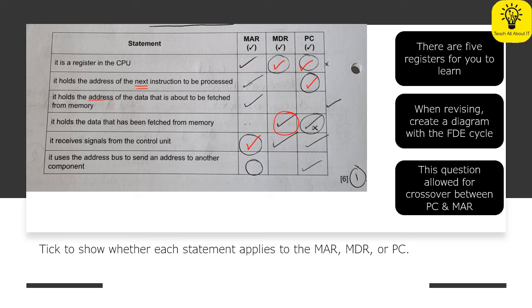So the last one, it uses the address bus to send an address to another component. Now if it's an address it's going to have to be either the PC or the MDR and the one that sends an address to another component is also going to be the MDR and the PC. So the PC sends the address to the MDR and the MDR uses the address bus to then go off into main memory. Now main memory is also another component so therefore we would need to tick both.